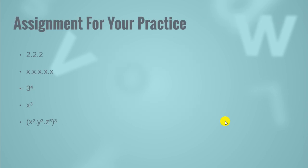Here are some practice questions for your assignment. The first is 2 multiplied by 2 multiplied by 2, which simply means 2 cubed. In the last question, you can see x raised to the power 2, multiplied by y raised to the power 3, and z raised to the power 5 — all as a single product raised to the power 3. You need to multiply 3 separately with each exponent: 3 times 2, then 3 times 3, then 3 times 5, when you open the brackets.